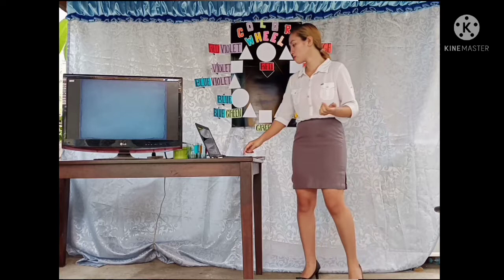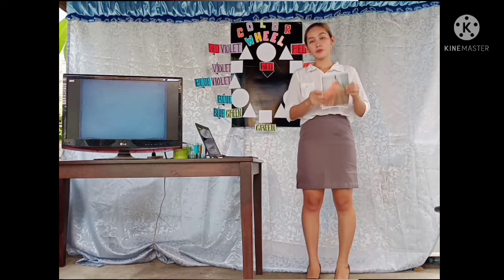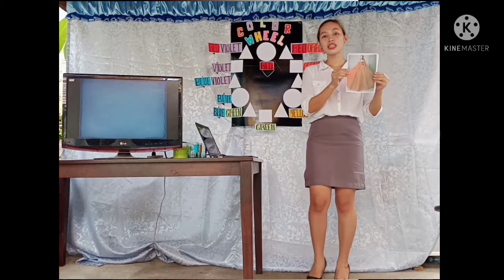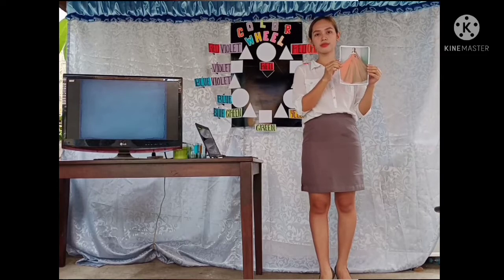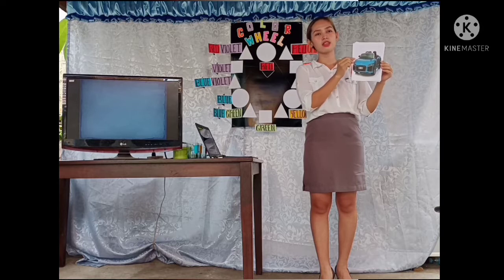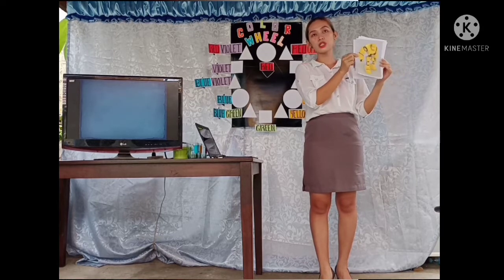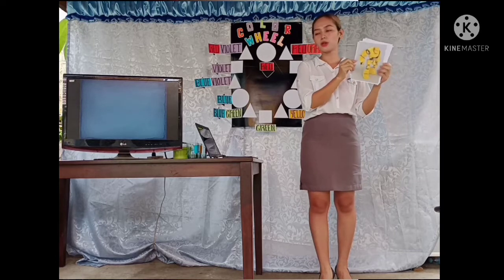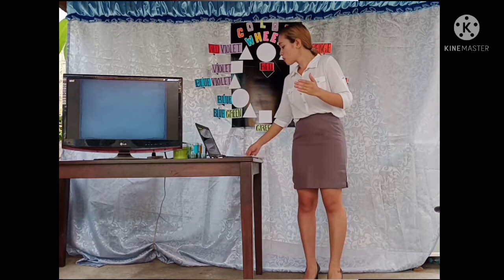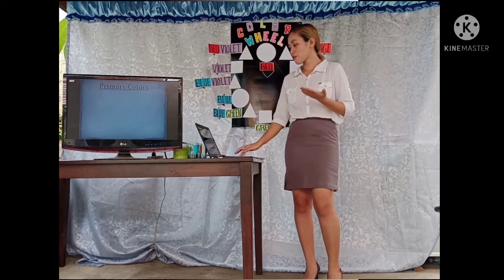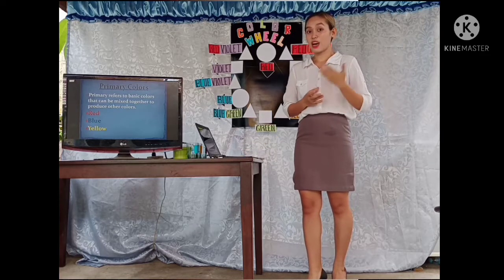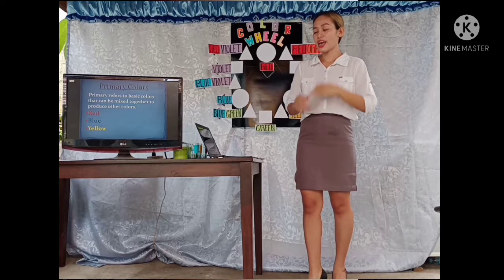I have here some pictures. I want you to answer what I am going to ask. So, what is the color of the dress of this party? Very good. Red. How about this car? Blue. Very good. How about this one? Yellow. Very good. So, red, blue, and yellow are the primary colors. When we say primary colors, this refers to the basic colors that can be mixed together to produce other colors. So, primary colors are red, blue, and yellow.